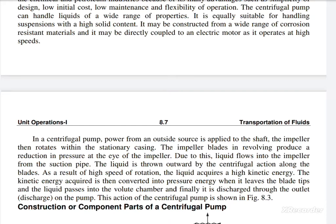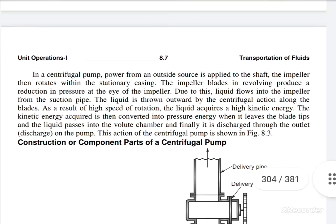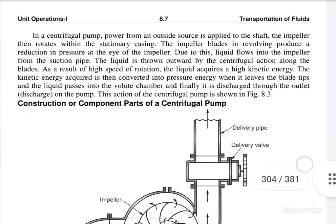As a result of the high speed of rotation, the liquid acquires a high kinetic energy. This kinetic energy is then converted into pressure energy when the liquid leaves the blades, passes into the volute chamber, and is finally discharged through the outlet discharge of the pump. The action of the centrifugal pump is shown in the figure.